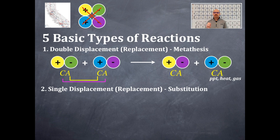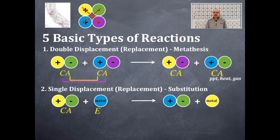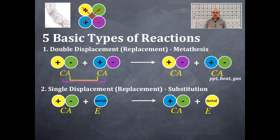Number two is a single displacement or a single replacement, also known as a substitution reaction. There are actually two different patterns here. The first pattern: you have a cation and anion with an element. If the element is a metal, it will displace the cation. Make sure you know that, because metals form cations.